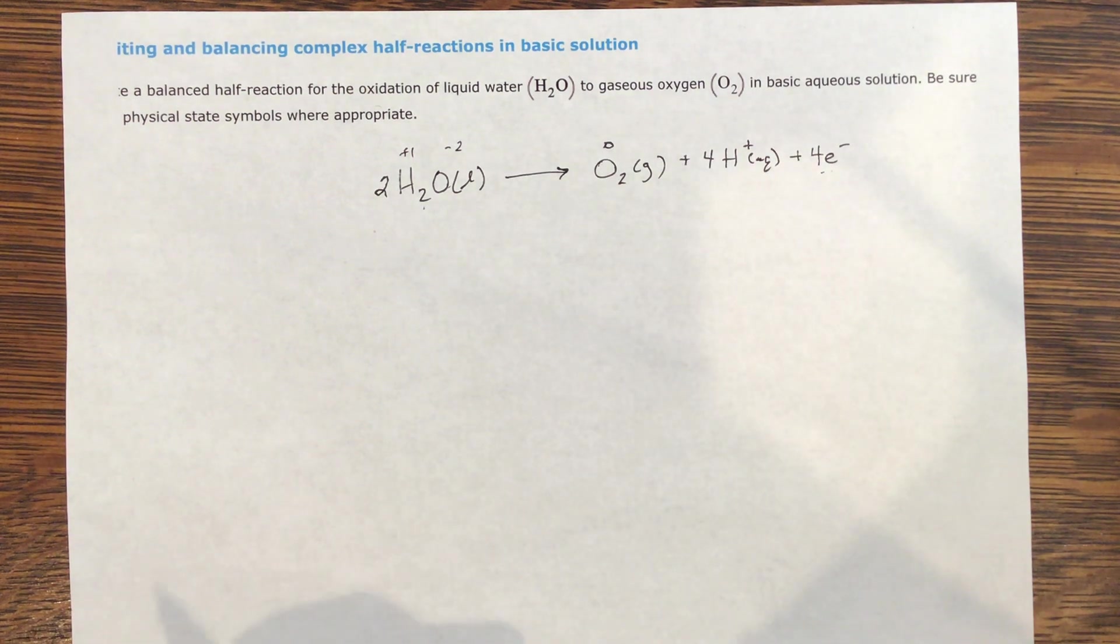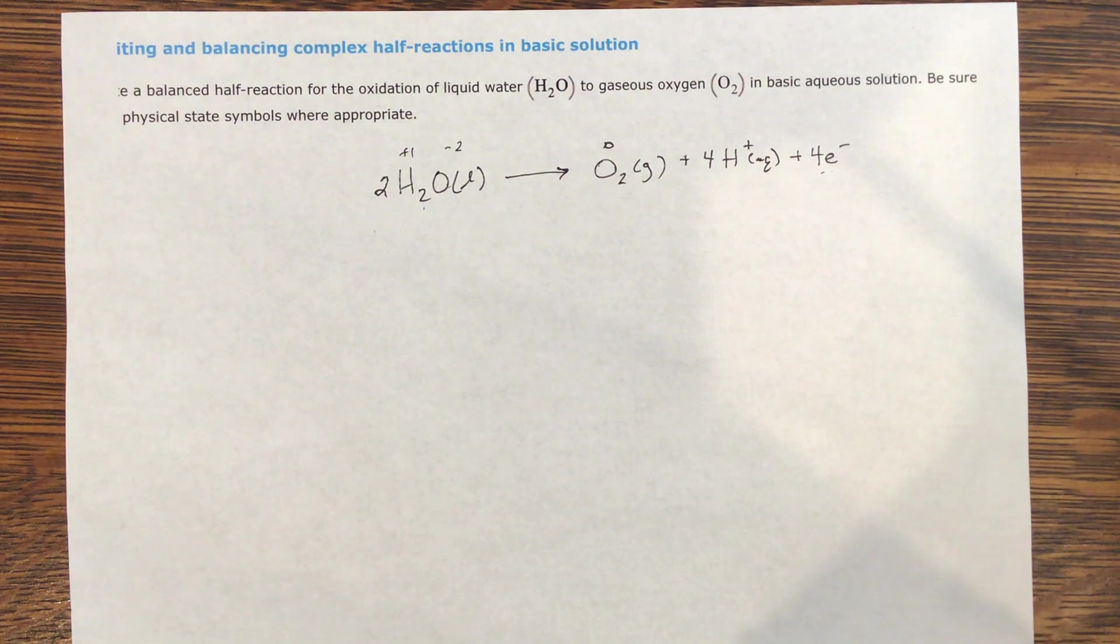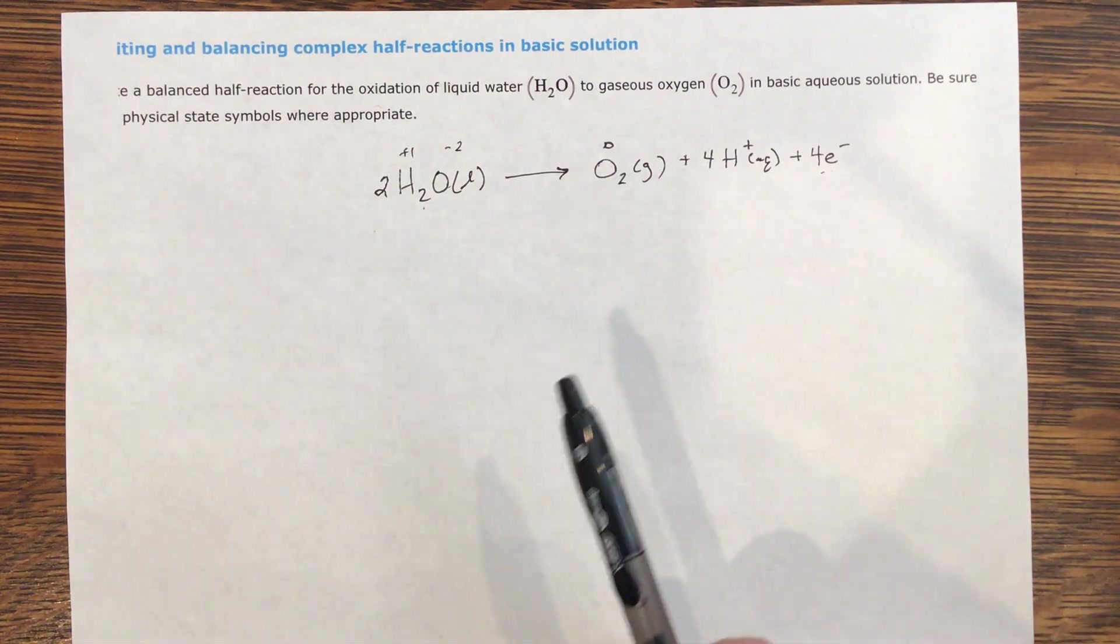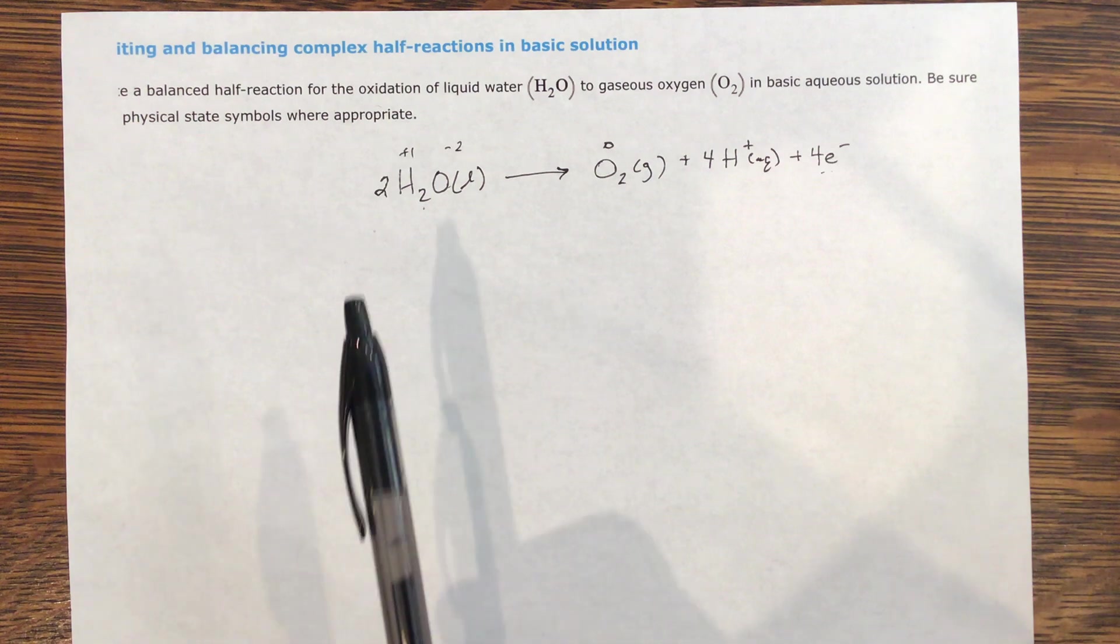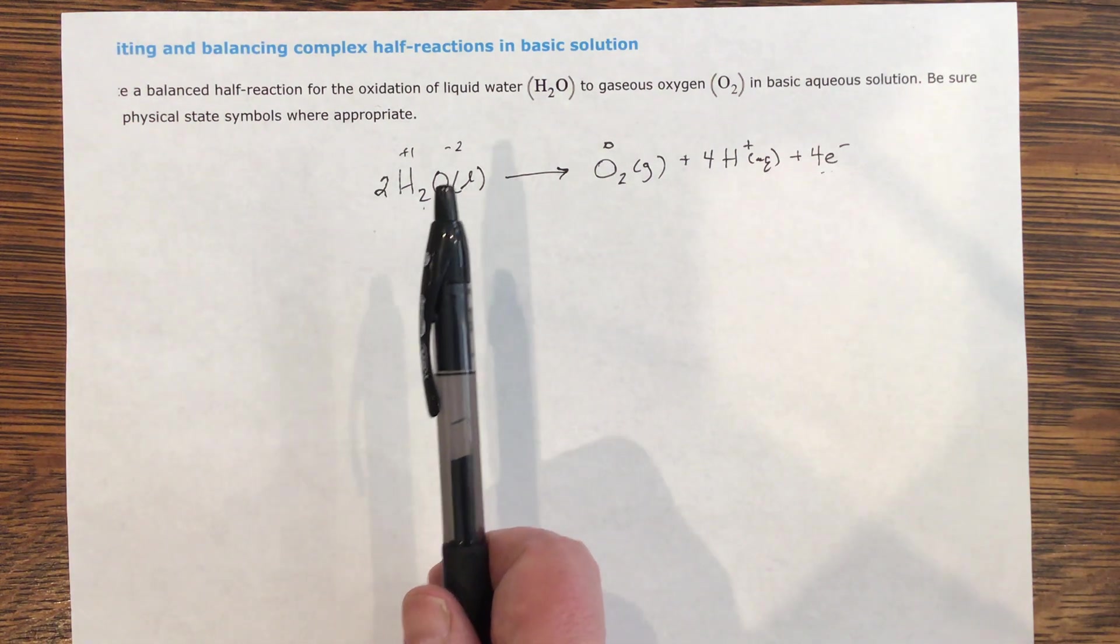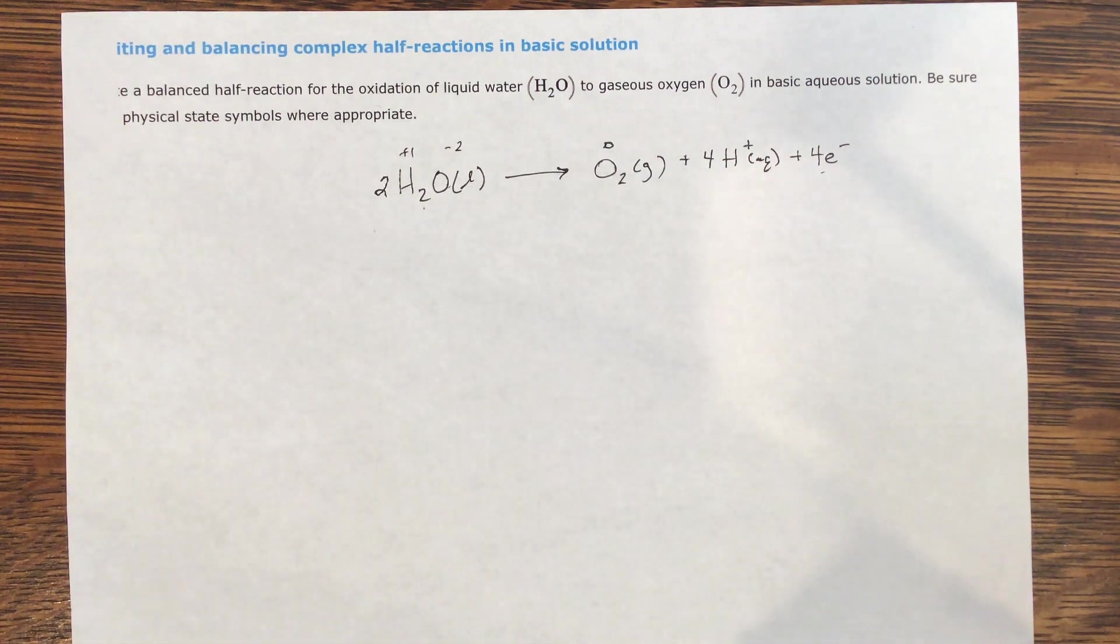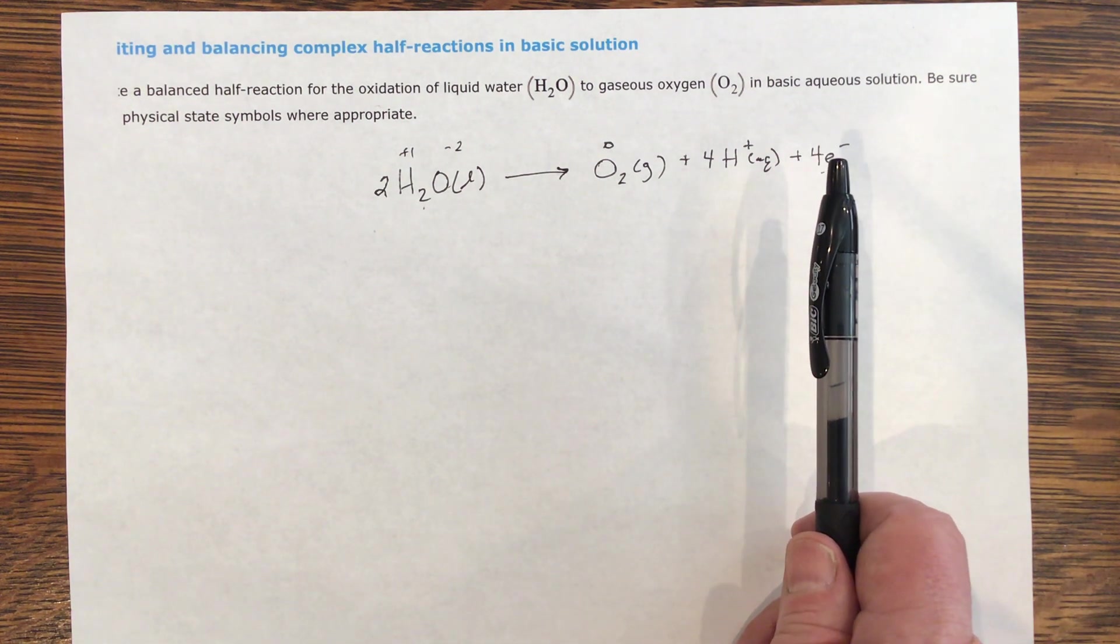Now, what's happening in balanced equations and why it's a headache to so many people is in order to balance something, you're adding things like protons that then you have to take care of later. You have to undo, and the way you undo a proton is with water. So let's see, on this side, we've got four protons and two oxygens, and my electrons are taking place.